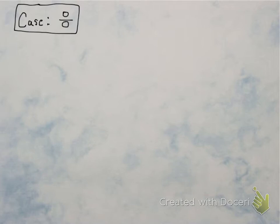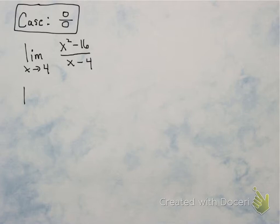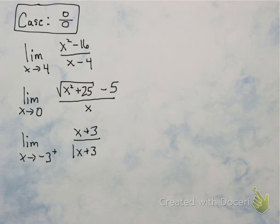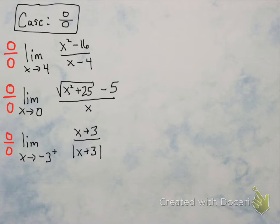Now let's look at the case when you get 0 over 0. If you plug in the number for the limit and get 0 over 0, what do you do? Examples might look like this: limit as x approaches 4 of x squared minus 16 over x minus 4, or others like it. If you plug in that limit number, you'll get 0 over 0 in every single one of these cases. Remember, 0 over 0 is not an answer — you need to do some algebra tricks.